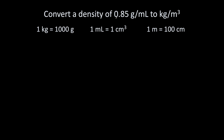This is easy. We need to change 0.85 grams per milliliter to kilograms per cubic meter. First, we are going to change grams to kilograms. Write what you have as a fraction. We have 0.85 grams per one milliliter.